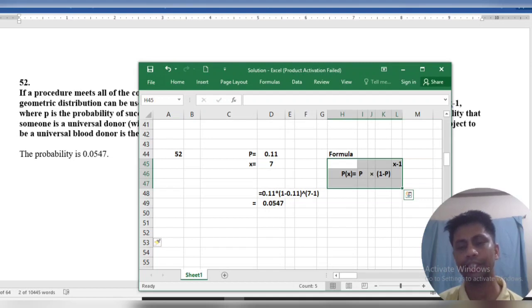So we can calculate: 0.11 × (1 - 0.11)^(7-1). We get the result: 0.0547.